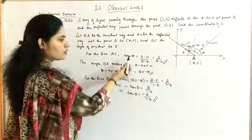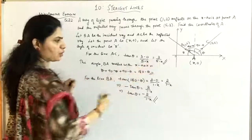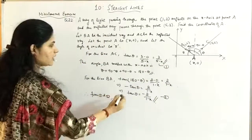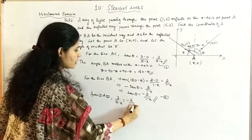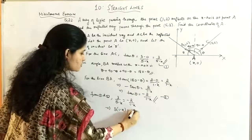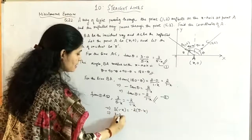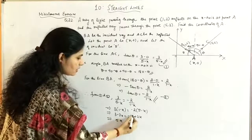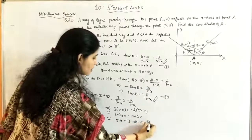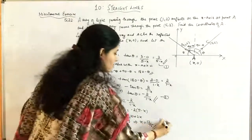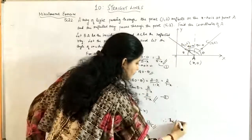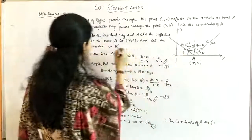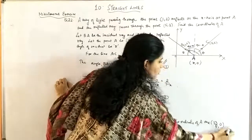Therefore, since we took A = (x, 0), the coordinates of point A are (13/5, 0).